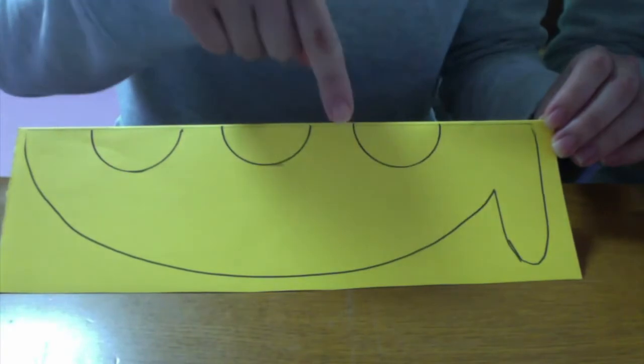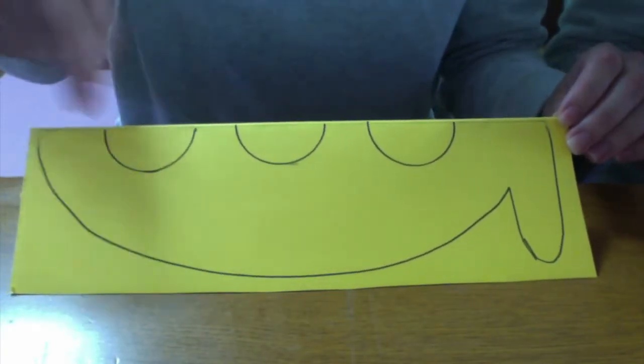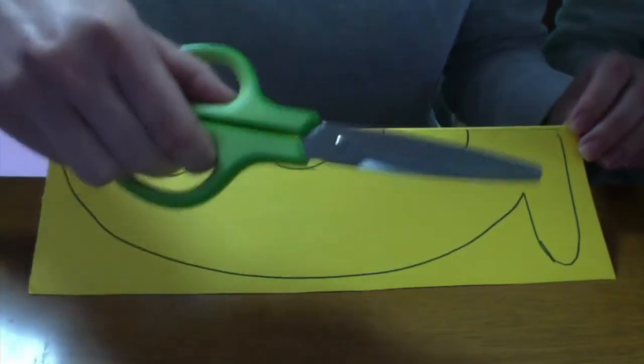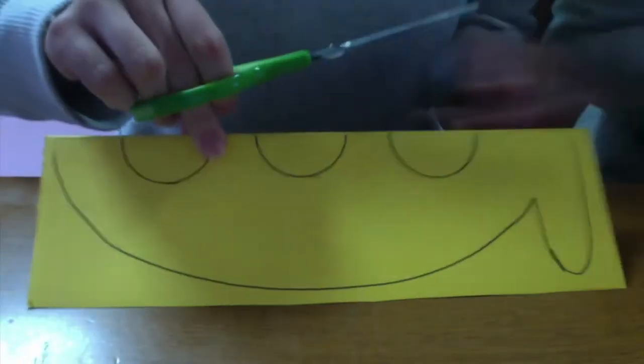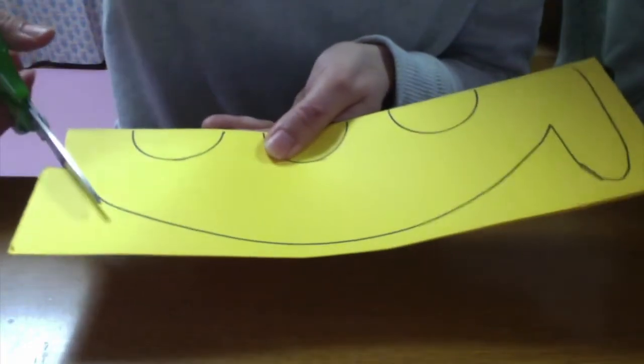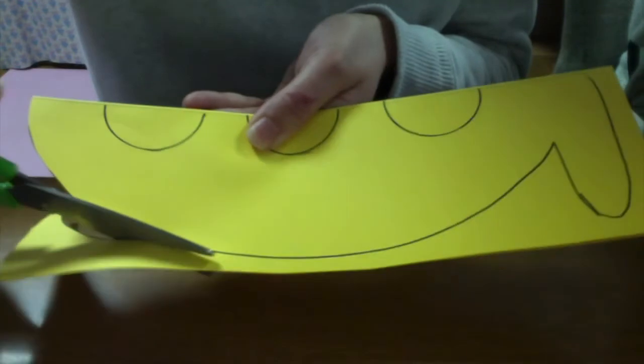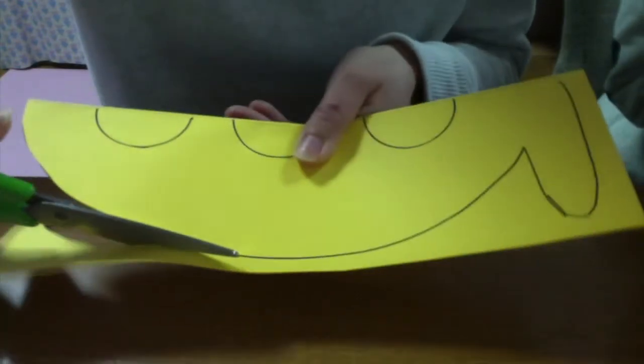Let's start by cutting out the outline of our submarine. Remember to start cutting from the side of the paper which is folded, and do your best to cut along the black line.